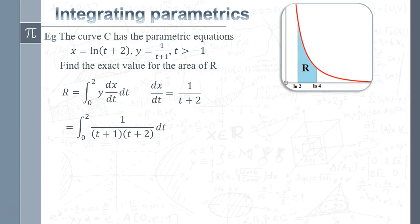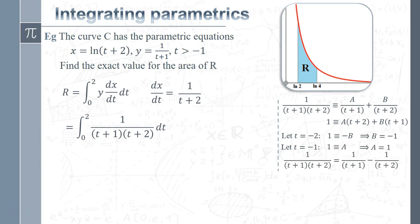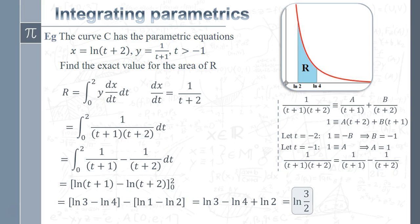We've got another partial fraction situation — partial fractions do tend to pop up within other topics. Let's deal with it quickly. Using the standard method: taking t = −2 gives B = −1, and t = −1 gives A = 1. So there's the partial fraction decomposition. We express the integral using those two separate fractions and integrate, getting ln(t + 1) − ln(t + 2), all between limits of 2 and 0.